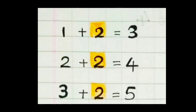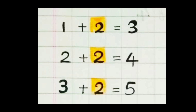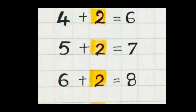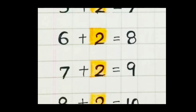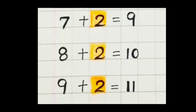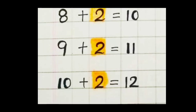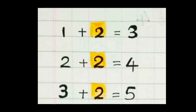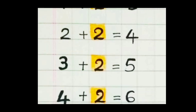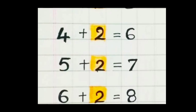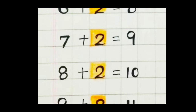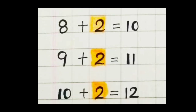Step two. We can say a little more faster. One plus two, three. Two plus two, four. Three plus two, five. Four plus two, six. Five plus two, seven. Six plus two, eight. Seven plus two, nine. Eight plus two, ten. Nine plus two, eleven. Ten plus two, twelve. Once again. One plus two, three. Two plus two, four. Three plus two, five. Four plus two, six. Five plus two, seven. Six plus two, eight. Seven plus two, nine. Eight plus two, ten. Nine plus two, eleven. Ten plus two, twelve.